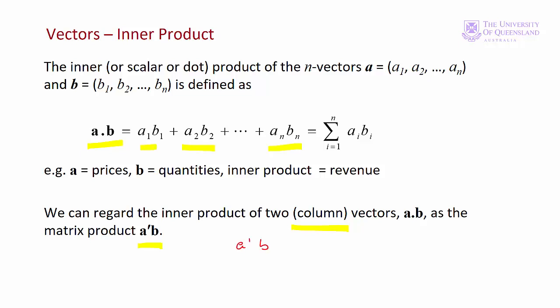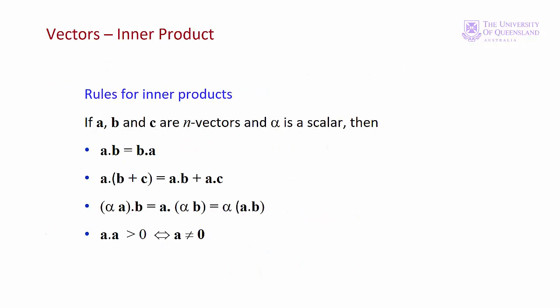A prime B is a 1 by n matrix times an n by 1 matrix, giving us a 1 by 1 matrix or a scalar. But back to dot products, we have some rules.